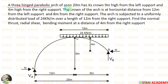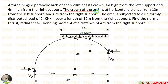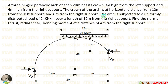A 3-hinged parabolic arch of span 20 meter has its crown 9 meter high from the left support and 4 meter high from the right support. The crown of the arch is at a horizontal distance of 12 meter from the left support and 8 meter from the right support. The arch is subjected to a uniformly distributed load of 24 kN per meter over a length of 12 meter from the right support.